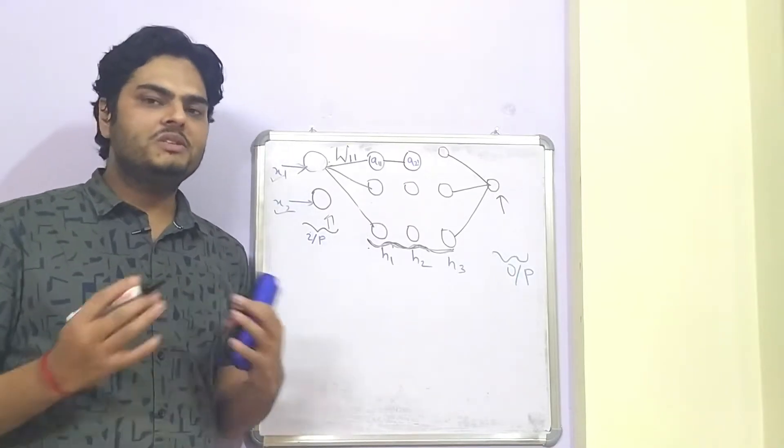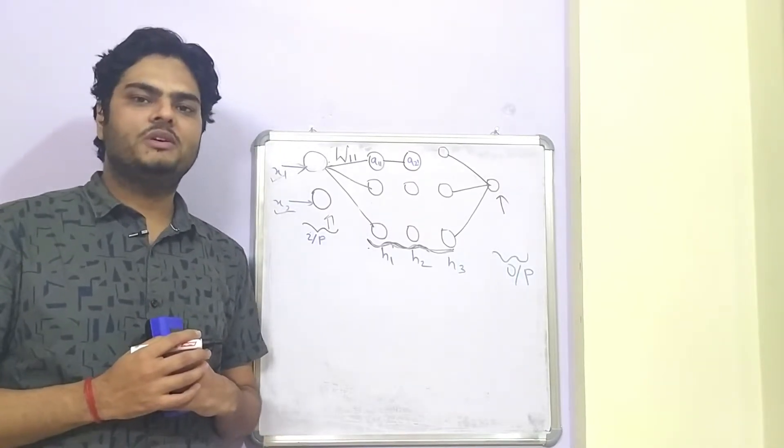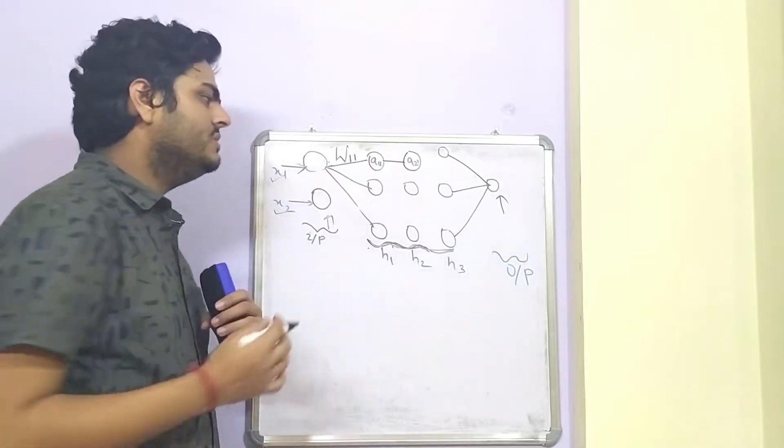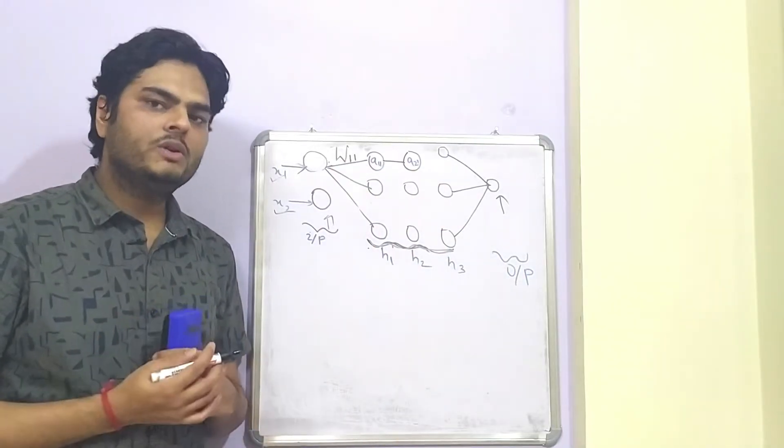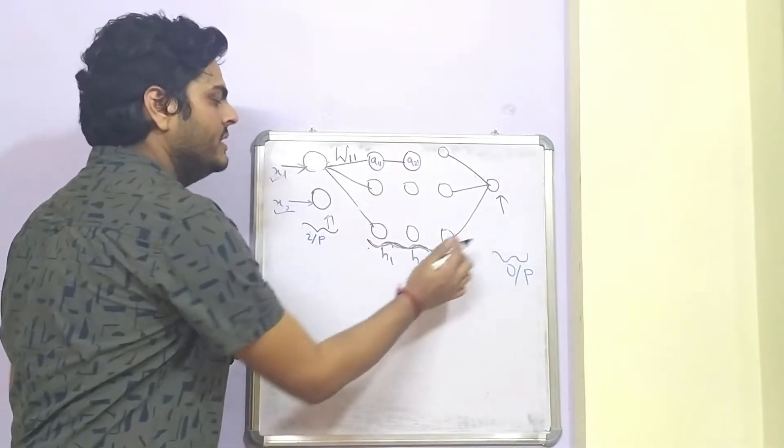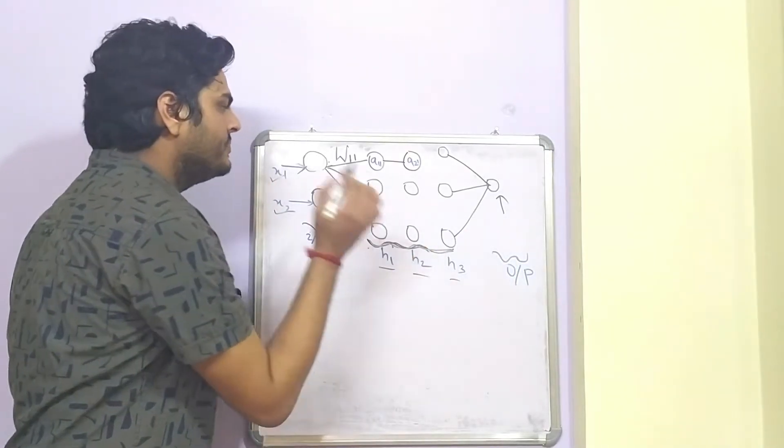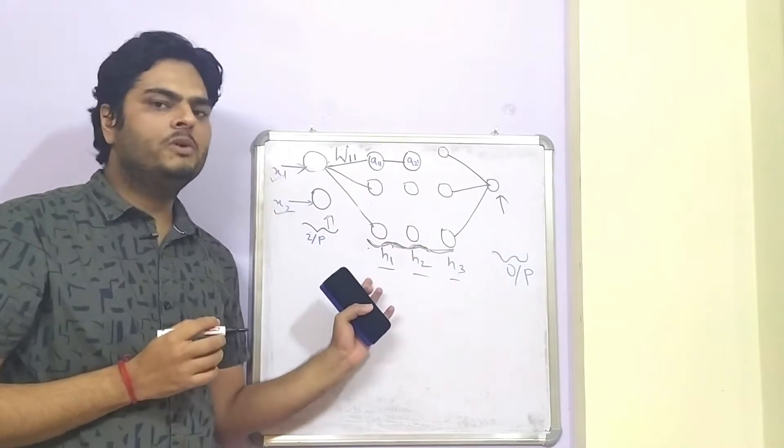Welcome to unfold data science friends. This is Aman here and I'm a data scientist. In this picture that you can see in front of you, I have a neural network where I have input layer, output layer and three hidden layers. I'm calling this as a deep neural network.